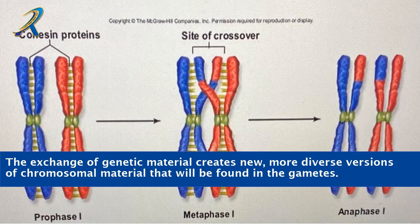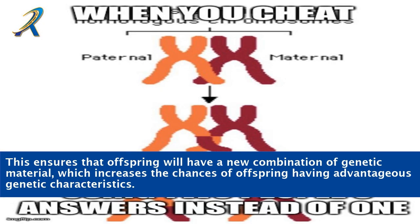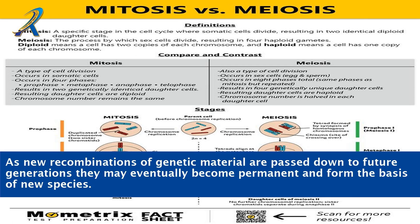The exchange of genetic material creates new, more diverse versions of chromosomal material that will be found in the gametes. This ensures that offspring will have a new combination of genetic material, which increases the chances of offspring having advantageous genetic characteristics. As new recombinations of genetic material are passed down to future generations, they may eventually become permanent and form the basis of new species.